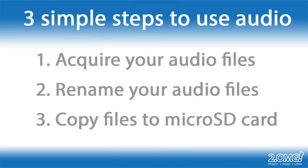Quick recap: your first step is to find and download your audio files. Second, rename them — 0001 for your trigger track and 0002 and up for ambient tracks. Third, copy these files in numerical order to your micro SD card and safely eject the card. Make sure your Prop Jammer is not powered up, then install the micro SD card. Once you power the unit up, you should hear your first ambient track begin to play. Thanks for watching.